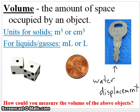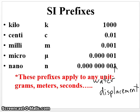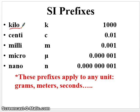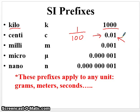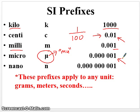Let's talk about prefixes. When the units we're measuring are very big or very small, we use prefixes. Kilo means one thousand. Centi is one hundredth. Milli is one thousandth. Micro (written with a Greek letter) is one millionth. And nano, the smallest, is one billionth. These prefixes can apply to any unit — for example, kilogram, kilometer, centigram, centimeter, millisecond, and so on.